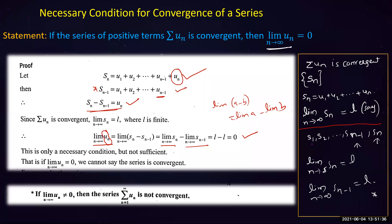Note the difference: Sₙ is the sum of the first n terms, but uₙ is just the nth term — they are not the same. For example, if the series is Σ(1/n²), then uₙ = 1/n², and lim(1/n²) = 0 as n→∞. But what I'm saying is: if the limit is zero, the series may not be convergent. This is only a necessary condition.